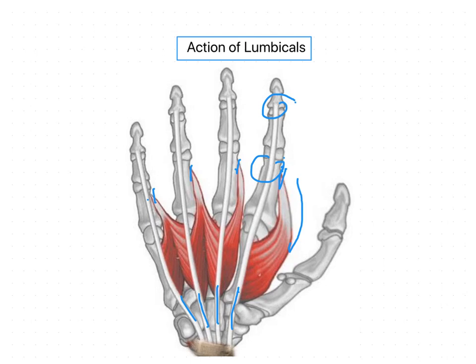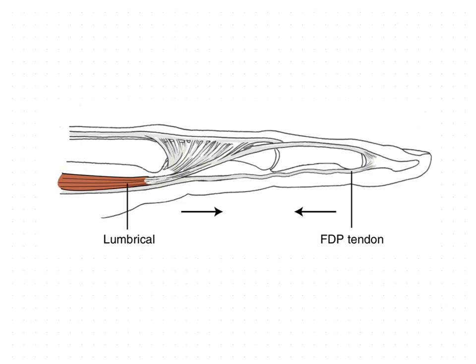In MCP extension, the transverse metacarpal ligament prevents the lumbrical muscle from migrating dorsally and losing tension as the IP joints extend. This transverse metacarpal ligament helps the lumbrical muscle avoid dorsal migration and tension loss as the IP joints extend. Some studies have found that the lumbricals are more frequently active as IP extensors in the MCP extended position than the interossei.